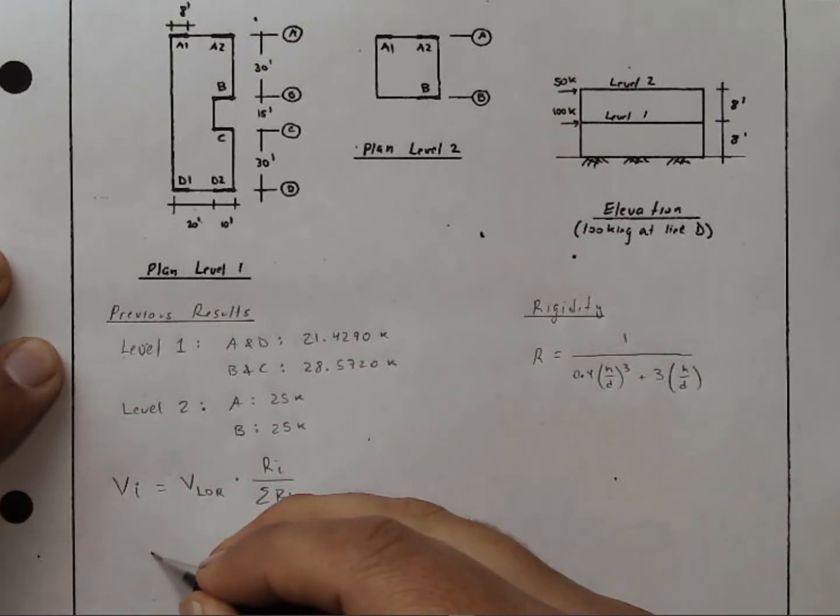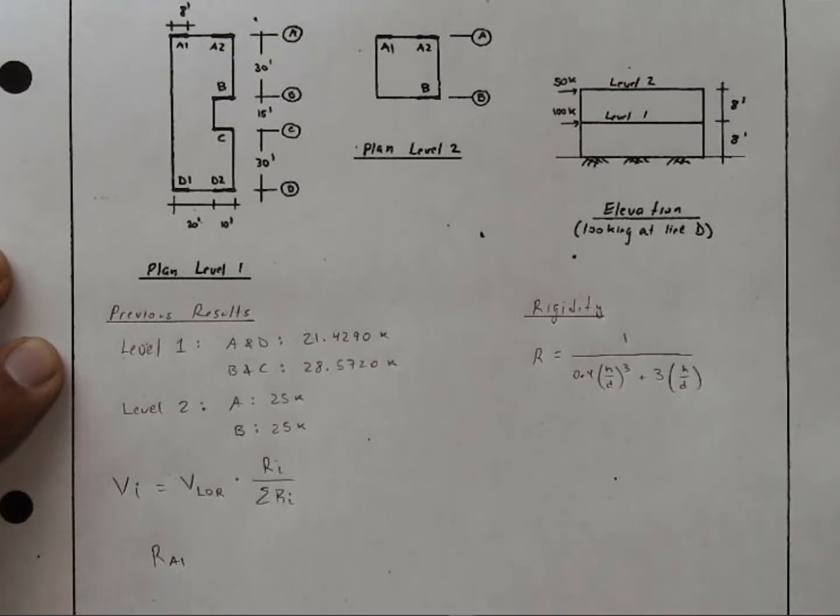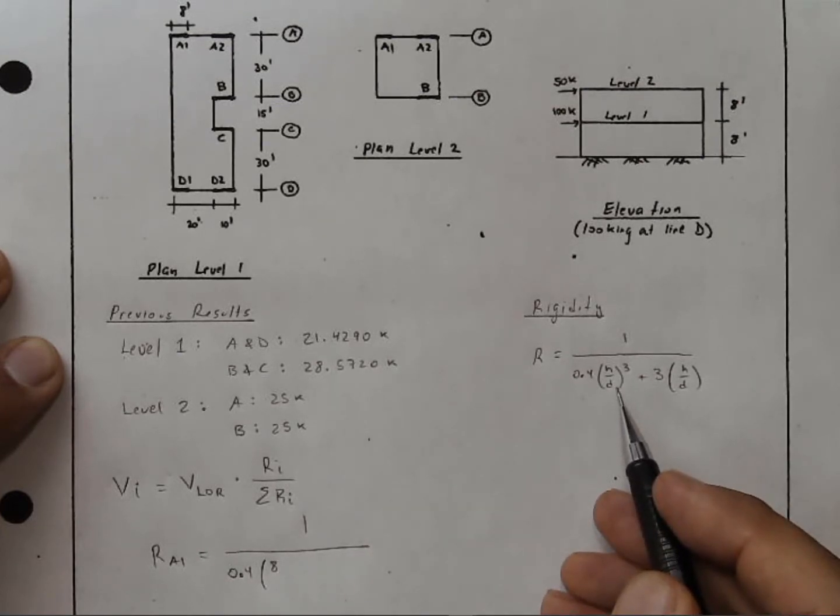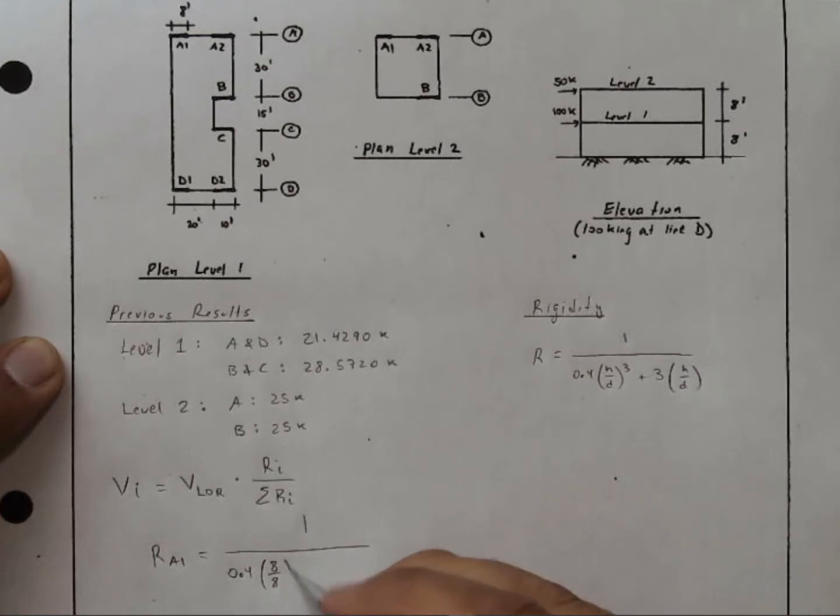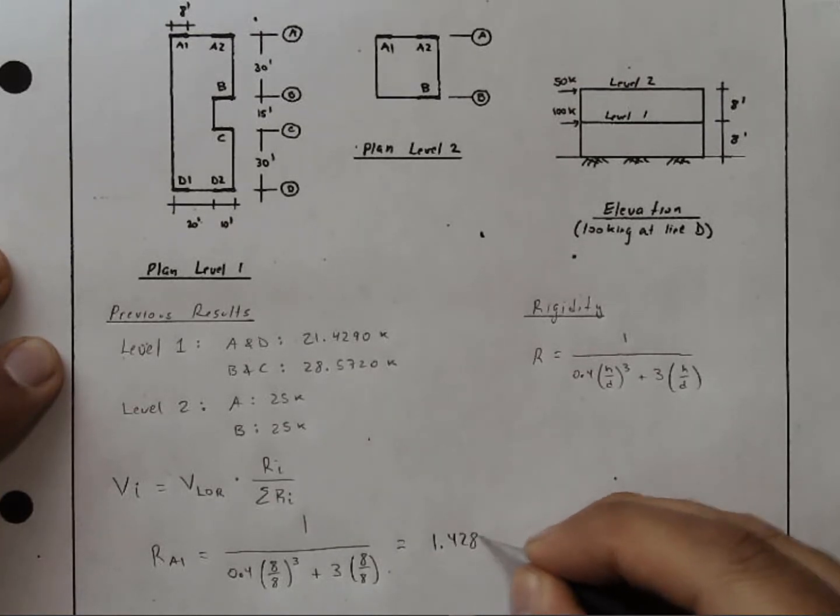Let's look here at the rigidity of A1. The rigidity of A1, 0.4. The height of the wall, right here, 8 feet. D is the length of the wall, 8 feet. And this is cubed, although it doesn't matter because that's 1. Plus 3 times 8 over 8. We would calculate this to be 1.4286.